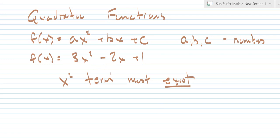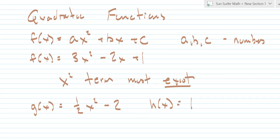If the x term didn't exist, it would still be quadratic. For example, one half x squared plus or minus 2 is also quadratic — the x squared is there but the x term is missing. Or consider h of x equals 18x minus 3x squared: here we're missing the constant term c, but we have the bx term and the ax squared term. The ax squared term must exist; otherwise it is not a quadratic function.